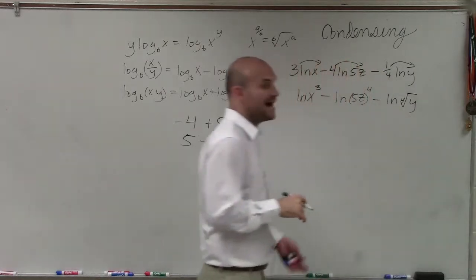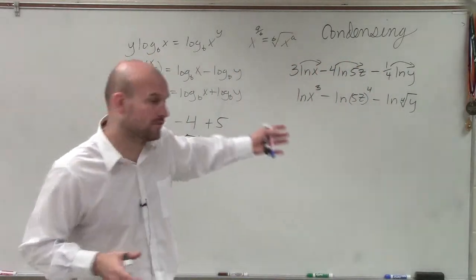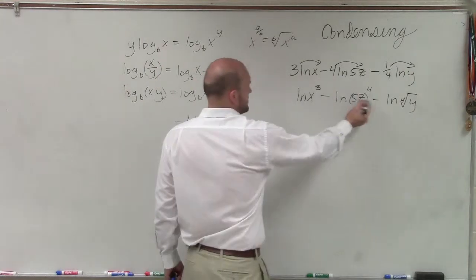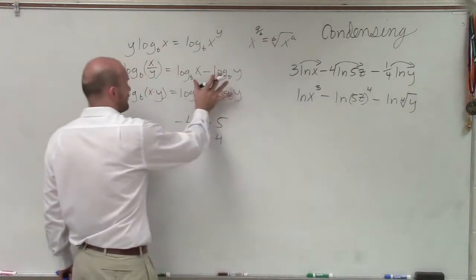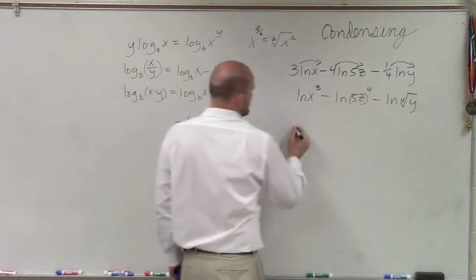OK, so now when we're doing a problem like this, we can just work from left to right like order of operations and simplify. So here, I have the difference of two logarithms, which I can rewrite as the quotient in one single logarithm.